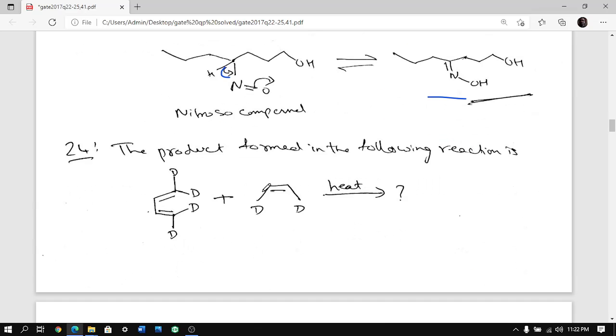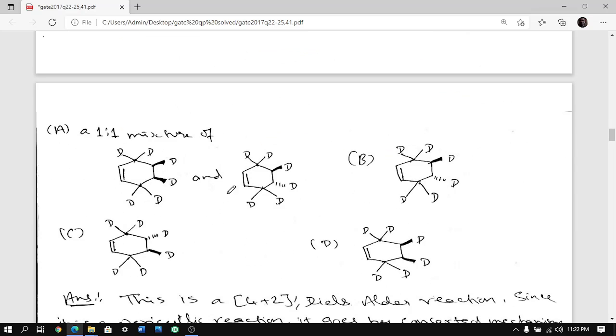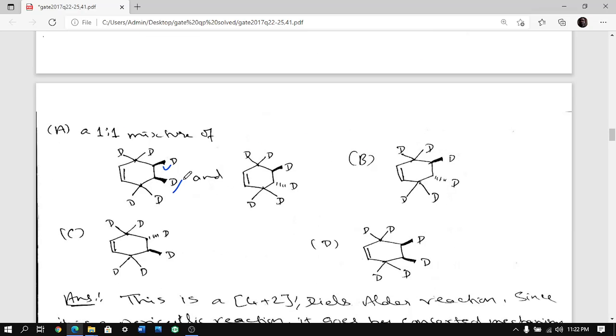Next question is simple again Diels-Alder reaction. The product formed in the following reaction - so it is a Diels-Alder reaction. This is diene, this is dienophile. Diene is two alkenes and dienophile is simple alkene. And it says the product - whether cis addition of both deuterium and trans addition both are forming or only trans is forming.